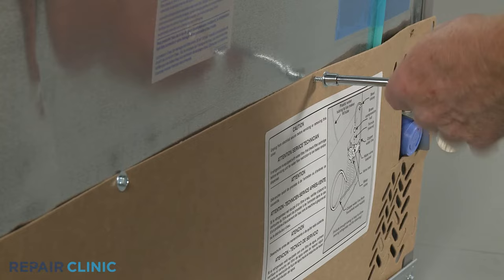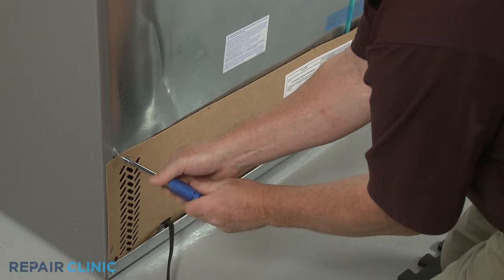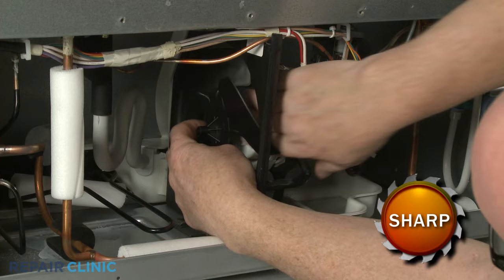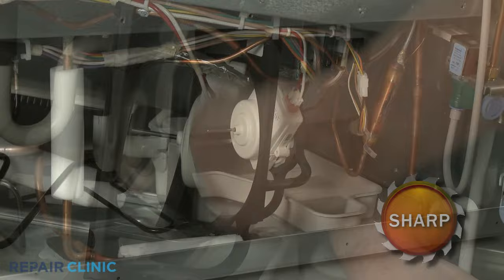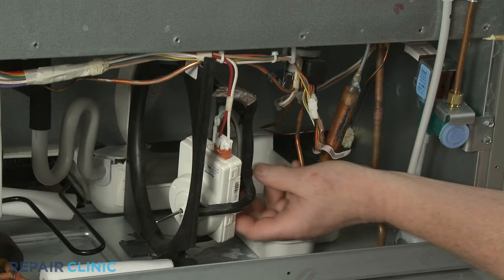Unthread the screws securing the access panel and set the panel aside. Reach in and push the condenser fan blade off of the motor shaft. Unthread any mounting screws securing the fan motor to a mounting bracket. Disconnect the wire connector to fully remove the old motor.